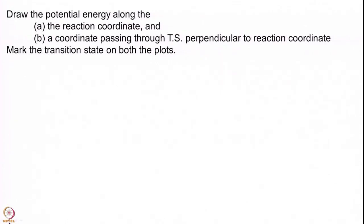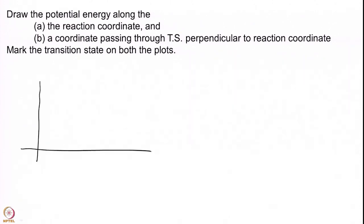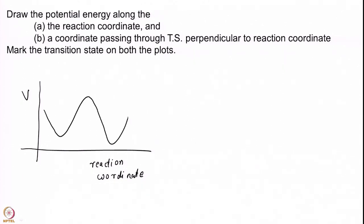Hopefully you have taken a pause. So now let us solve it together. For the first one we have to draw the potential energy along the reaction coordinate. This is the figure that you have commonly seen in every single textbook in kinetics — you get a figure where this is reactants, this is products, and this is the transition state, the maximum saddle point. This is your very familiar figure.